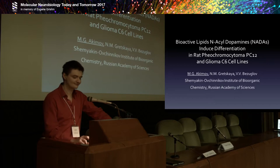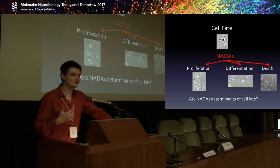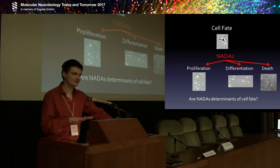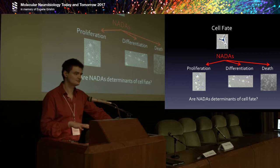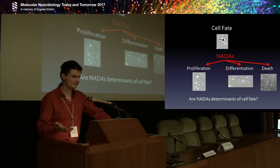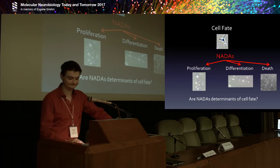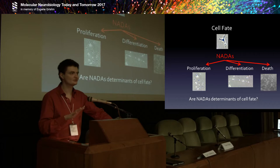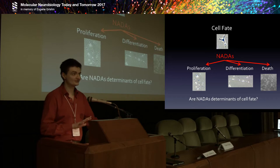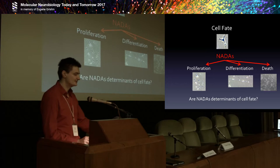When we started this work, the only thing known about the activity of the N-acyl dopamines was their ability to interact with the vanilloid receptor in pain transduction and to induce cell death. We said: what about other activities? We know that molecules which can induce cell death are sometimes able to induce cell differentiation as well, and there are other molecules able to influence cell proliferation — but usually those are different molecules.